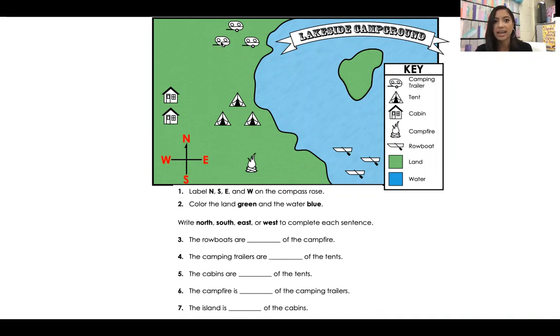So this camping trailer, as we see on our map, is over in the key. It looks like a camping trailer and it's clearly labeled. All these triangles are tents, all these cabins are cabins, campfire, rowboats, land is green, water is blue. We also have our compass rose that shows us north, east, south, and west.